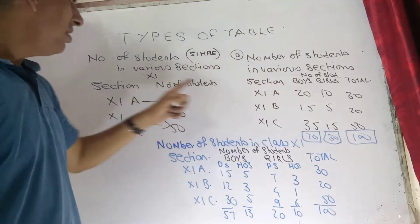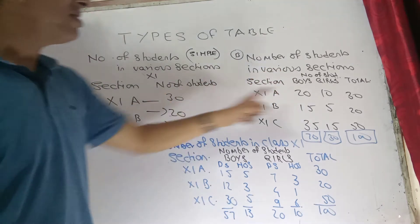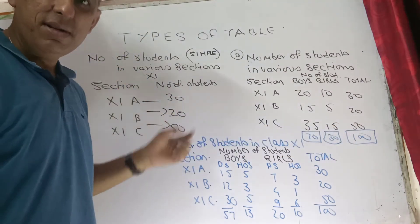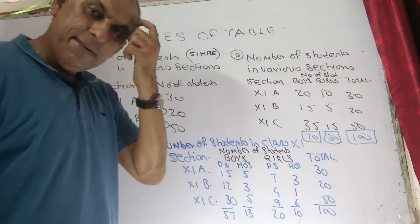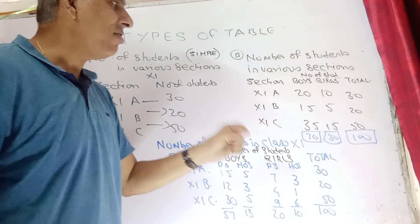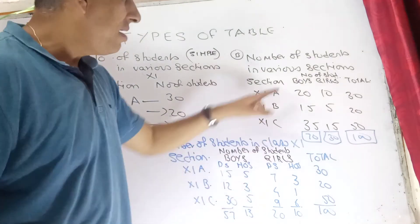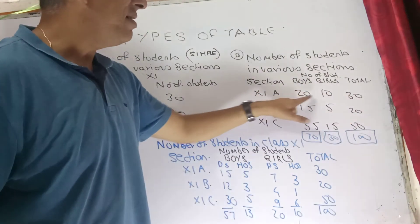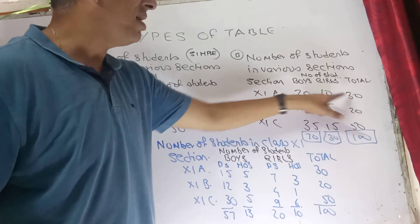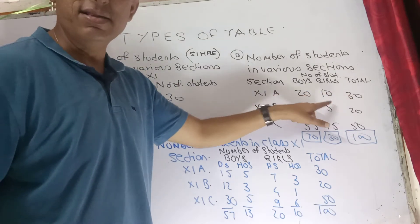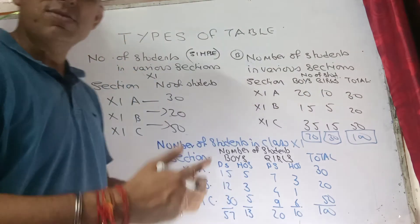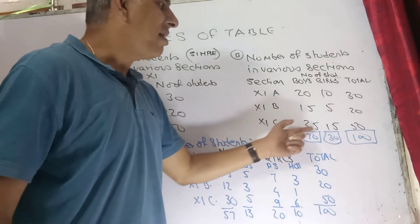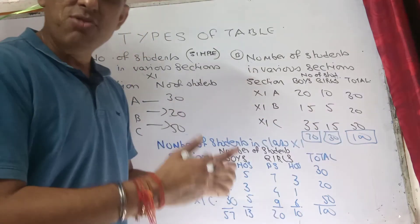Now if you move to the right-hand side, check again: the number of students in various sections — total is still 30, 20, and 50 as in the first table. But here the students are being divided on the basis of gender. In 11B, the total is 30, but 20 are boys and 10 are girls. So this is a more descriptive table. Similarly, 35 and 15 with regard to 11C.